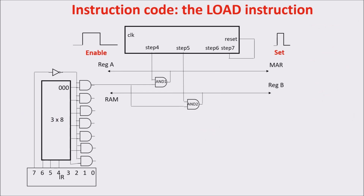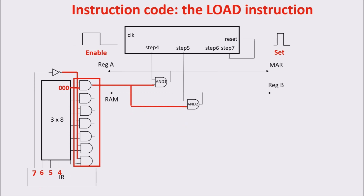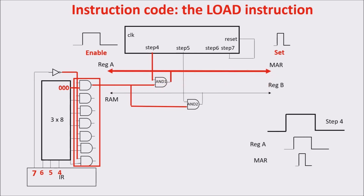Now we see how to execute the load instruction in steps 4 and 5. Here you see the logic circuit we need to execute the load instruction. First, being bit 7 of the instruction register at 0, we enable all the AND gates, thus enabling the NOT ALU instruction section. When bits 4, 5, and 6 are 0, 0, 0, we have the OP code for the load instruction, and the first output of decoder 3-to-8 is ON, putting ON the first AND gate. When step 4 arrives, we put ON the output of AND 1, giving an enable pulse to reg A, putting the register content on the bus, and a set pulse to register MAR, acquiring the content from the bus.